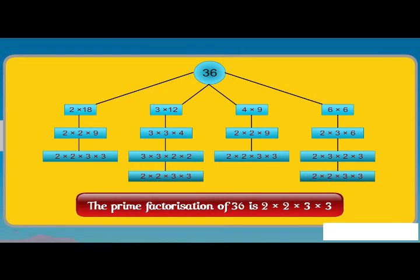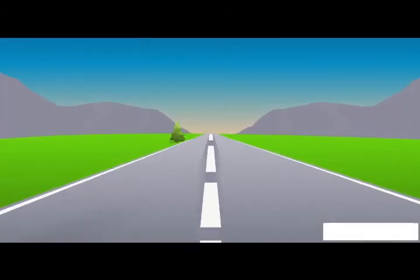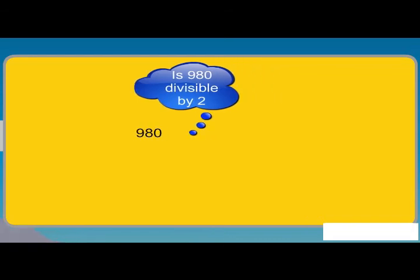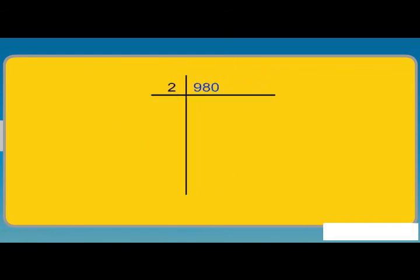Now, let me tell you the procedure of prime factorization of large numbers. Let us take number 980. The smallest prime number is 2. Is 980 divisible by 2? Recall the divisibility rule? Yes, as 0 is at units' place, we divide the number 980 by 2. On dividing by 2, we have 490, an even number again. So, we again divide with 2. Now, we have 245.